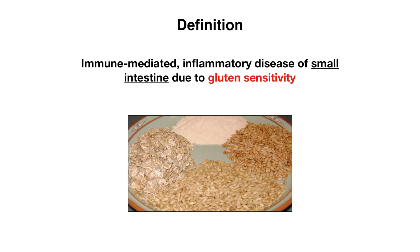Celiac disease is an immune-mediated inflammatory disease of the small intestine — it's important to know that it affects the small intestine — and it's due to an environmental agent known as gluten. Gluten is a structural protein naturally found in grains which include wheat, spelt, barley, and rye.